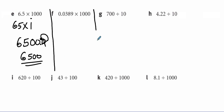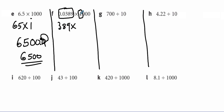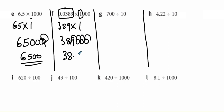Part F: ignore the decimal point, just do 389 multiplied by 1, that will be 389. Then take these zeros — one, two, three — and put them here. Count how many decimal places there are: one, two, three, four. So count four numbers: one, two, three, four. So the answer will be 38.9.